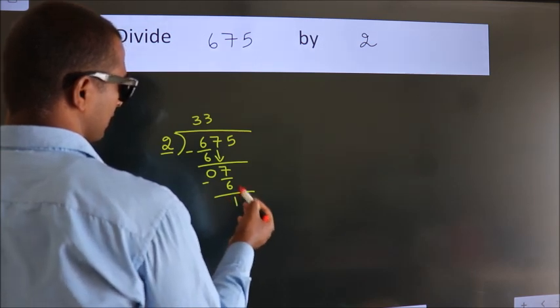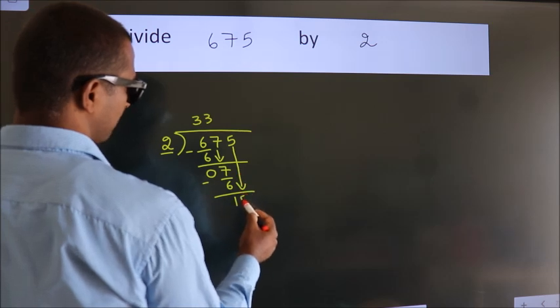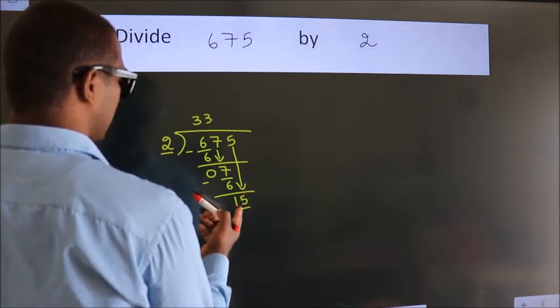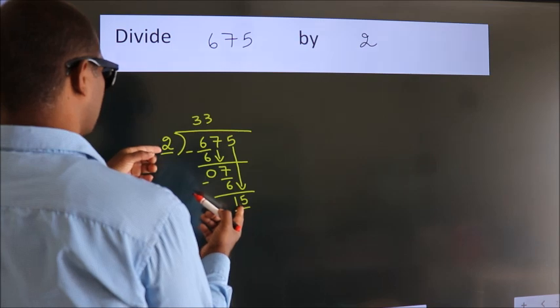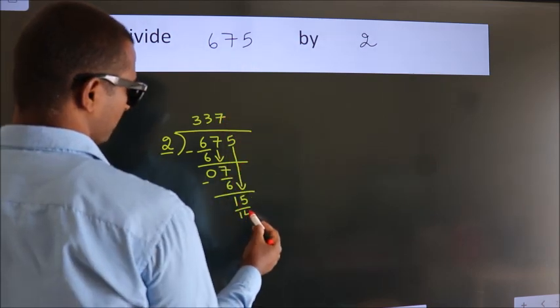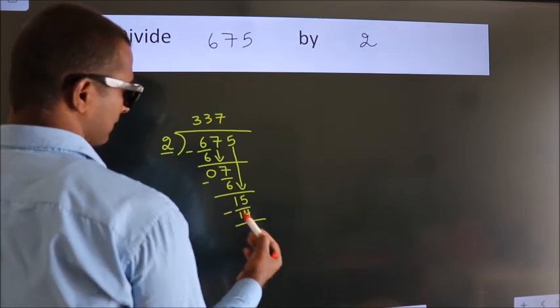After this, bring down the next number. So, 5 down. So, 15. A number close to 15 in the 2 table is 2 sevens, 14. Now, we subtract. We get 1.